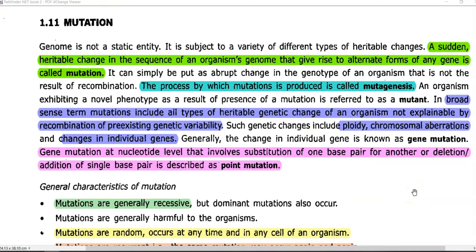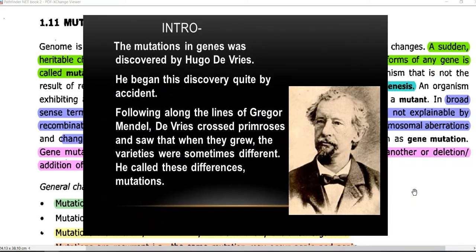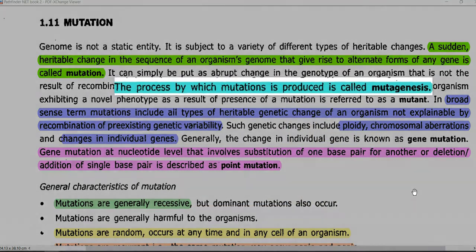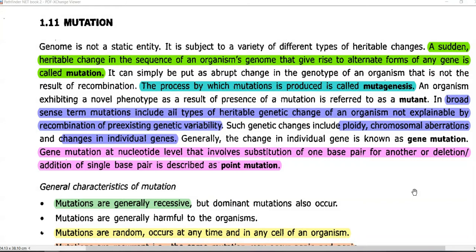Now we look at the definition for mutation. It refers to a sudden heritable change in the nucleotide sequences of an organism's genome that gives rise to alternative forms for any genome. The term mutation is coined by a scientist named Hugo de Vries. The process by which this mutation is effected in an organism is called mutagenesis. In a broader sense, mutation includes all types of heritable genetic changes that cannot be explained by normal genetic mechanisms, that is by recombination of pre-existing genetic variability.